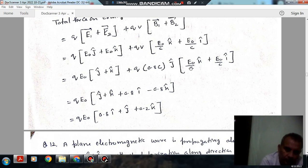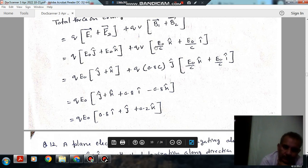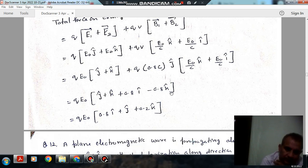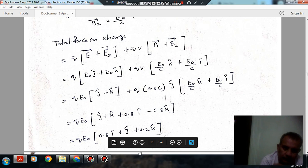j cross k will be i and j cross i is minus k. So 0.8i minus 0.8k from magnetic terms. Adding all terms: 0.8i plus j plus 0.2k. The answer is q E0 (0.8i cap plus j cap plus 0.2k cap).